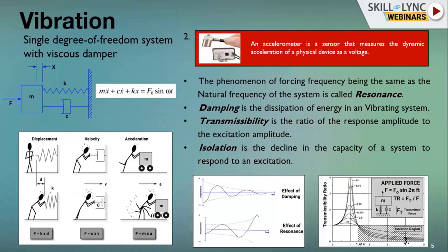Vibration is measured using accelerometers. Taking the example of a single degree of freedom system with mass, damper, and spring: resonance occurs when a periodic forcing frequency equals the natural frequency of the system, causing an abrupt increase in amplitude. Damping is the dissipation of energy — it reduces amplitude at the resonance condition. Transmissibility is the amount of vibration transferred from one system to another, and isolation is the amount of vibration hindered by an isolator restricting transfer between systems.